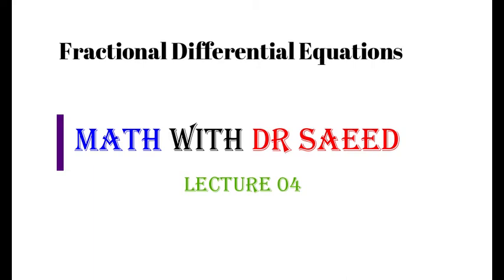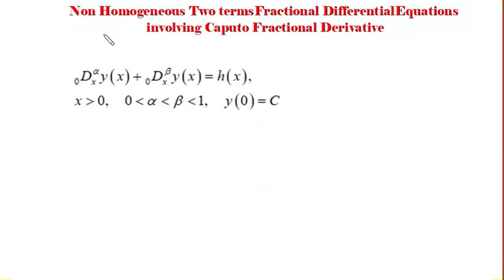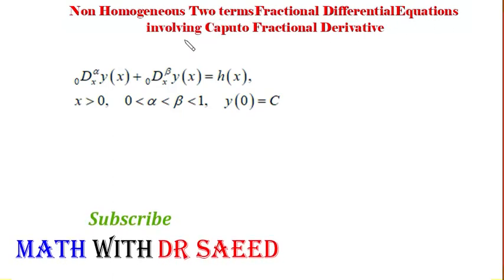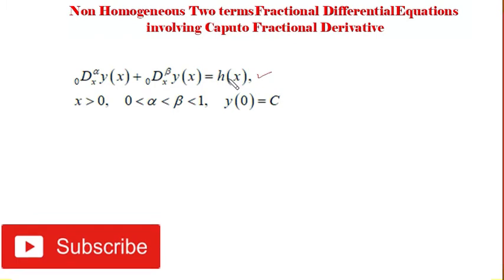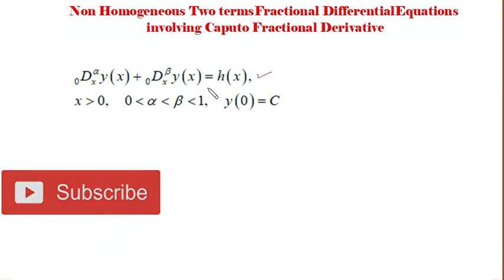We have started this fractional differential equation video series. In this lecture, I am going to solve a non-homogeneous two-term fractional differential equation involving the capital fractional derivative. This equation contains two terms with arbitrary order derivatives alpha and beta, both lying between zero and one with alpha less than beta, and a non-zero function h(x) on the right-hand side, making it non-homogeneous, with one initial condition.